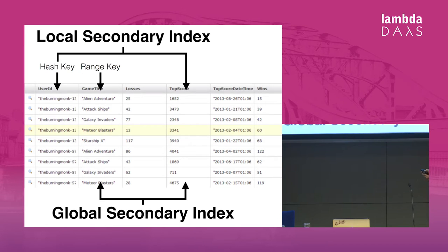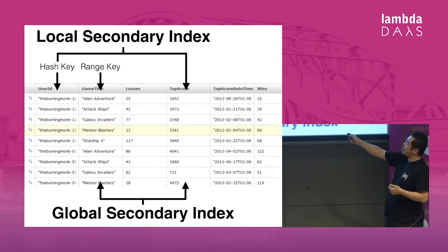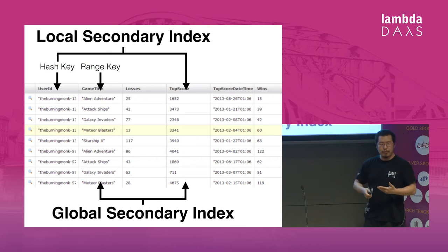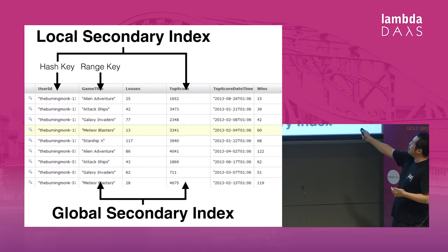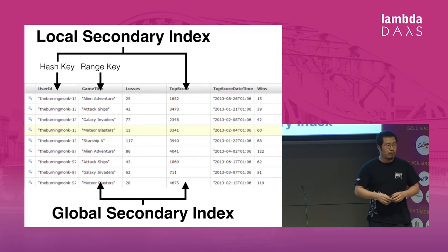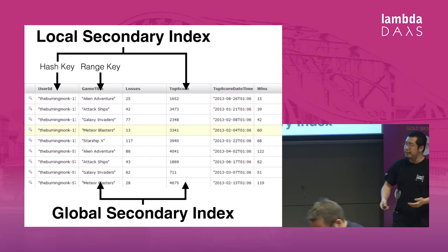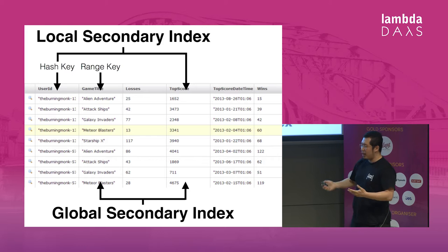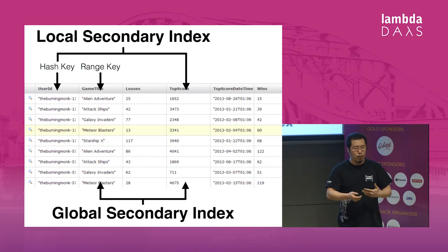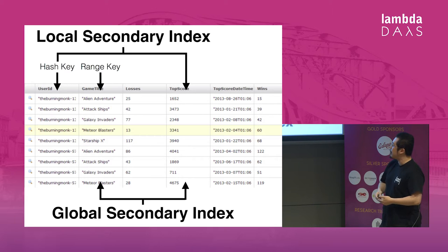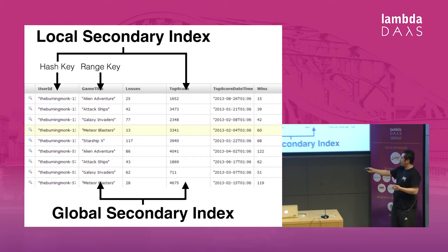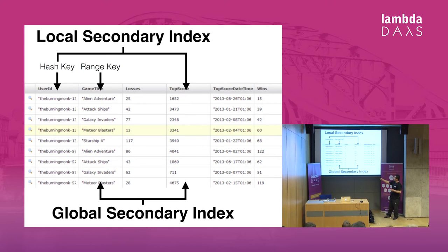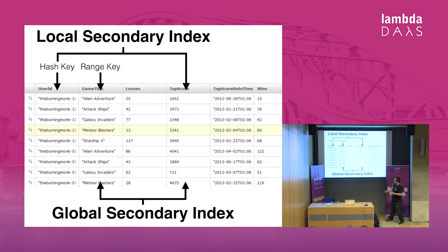As an example, I have a table that tracks players' scores in different games. Most of the time I'll be working against a particular player, so I put the hash key on user ID and range key on game title. But sometimes I want to sort data based on the top score, so for finding the top five games for a player I'd use a local secondary index. For asking questions about a particular game — like who are the top players in Donkey Kong — I'd use a global secondary index with game title as the alternative hash key and top score as the alternative range key.